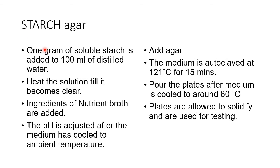For starch agar preparation: one gram of soluble starch is added to 100 ml of distilled water, then heat the solution until clear to dissolve starch properly, then add the ingredients of nutrient broth. Adjust pH after the media cools to ambient temperature, add agar, then autoclave at 121°C for 15 minutes. After cooling to around 50–60°C, pour the plates, allow them to solidify, do sterility testing for 18 hours, then use for testing.